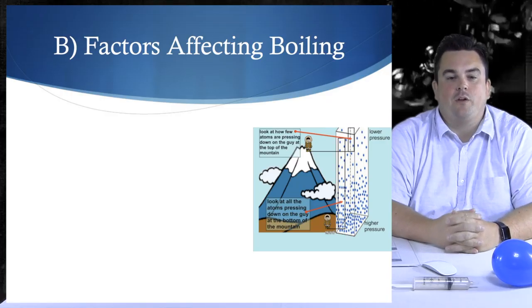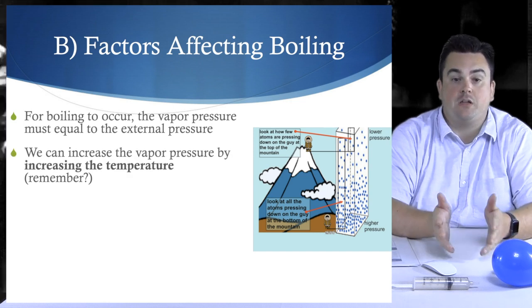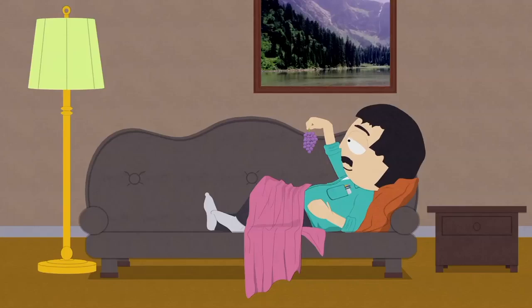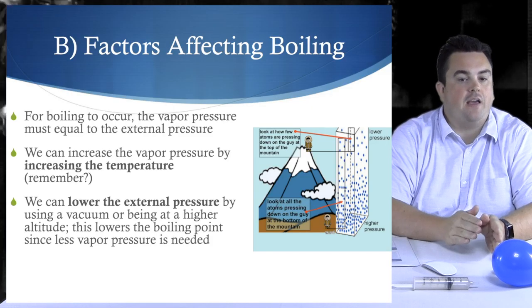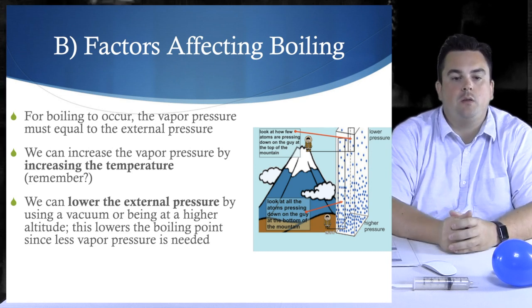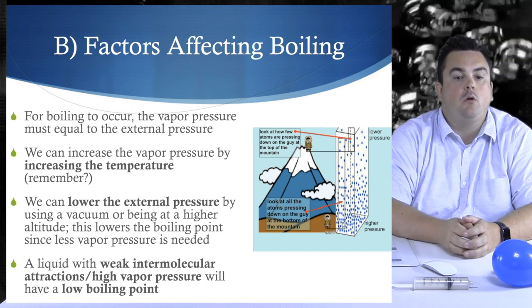All right, guys, let's talk about the man. The man is the external pressure trying to push you down. You've got vapor pressure, right? But you need the energy to fight back so you can build up enough vapor pressure to push back against the man. Eventually you get to a point where you're pushing back enough against the man, the external pressure, that you're free. You're free now anywhere in the liquid to turn into a gas. All right, let's look at some factors affecting boiling. For boiling to occur, the vapor pressure must equal the external pressure. We can increase the vapor pressure by increasing the temperature. We can lower the external pressure by using a vacuum or being at a higher altitude. This lowers the boiling point since less vapor pressure is needed.